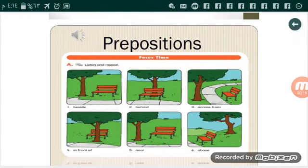Prepositions, حروف الجر. Number 1: Beside. Number 2: Behind. Number 3: Across from. Number 4: In front of. Number 5: Near. Number 6: Above.